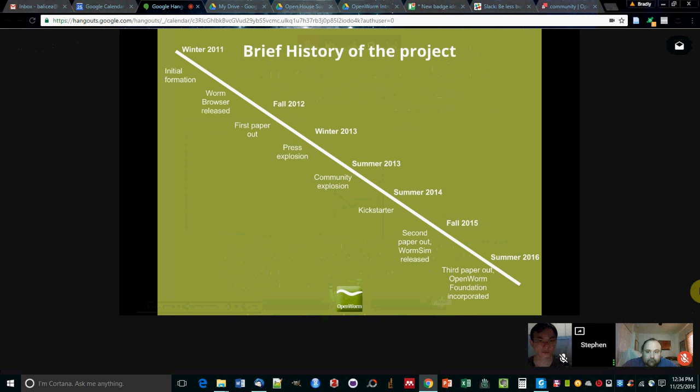So we began in about winter 2011 and right off the bat we were already putting things out into the open. So the open part of OpenWorm is of course that we work a radically open science process whereby which we put all our materials out online as soon as they're created. So the first thing we did is release this worm browser which you can still access today at browser.org. We got our first paper out later in fall 2012.